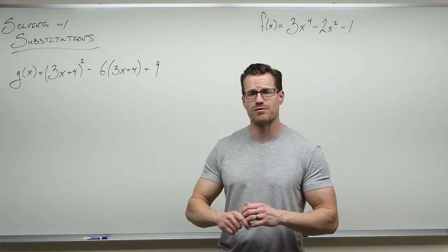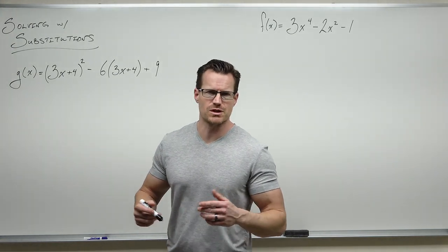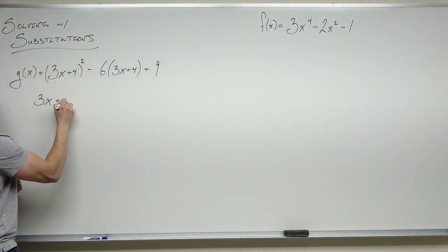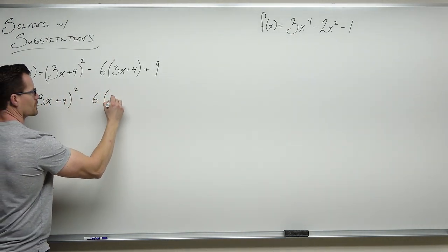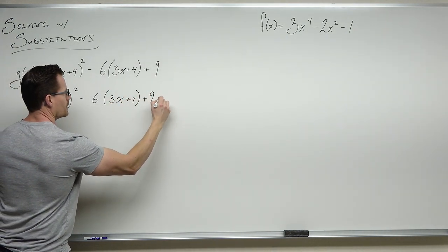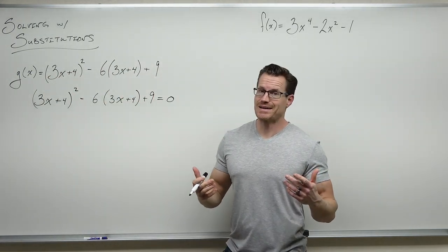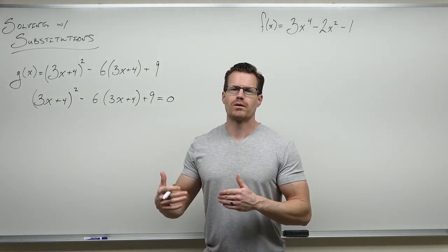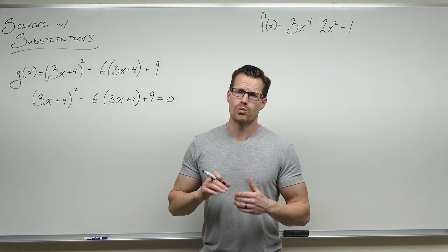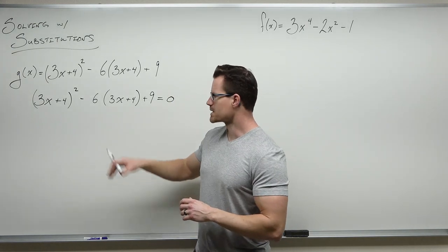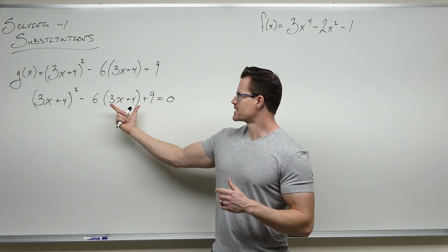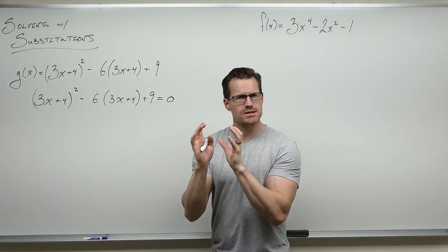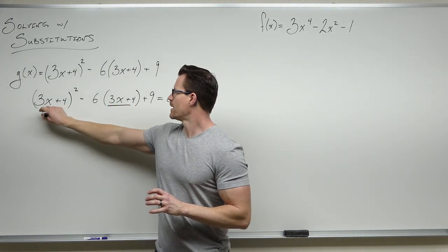Here's how to approach a problem like this. If we're supposed to find x-intercepts or solve for roots or zeros, the first thing we do — like always — is set this equal to zero. Now, maybe our first inclination is to distribute everything, but it's going to take a lot longer to do that. Here's what we're looking for and when a substitution will work.